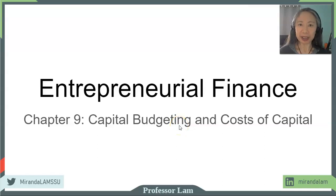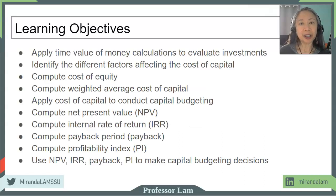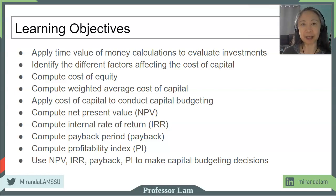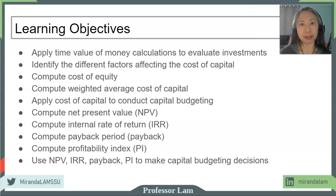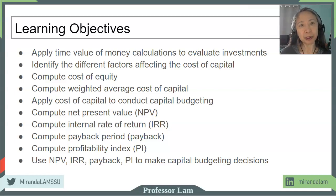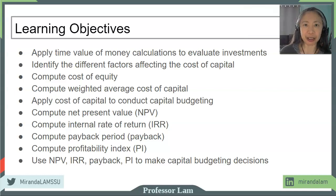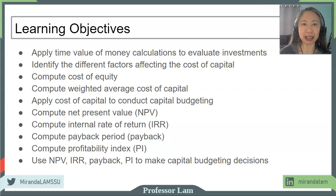Hello. Today we're going to go over Chapter 9, which focuses on capital budgeting and cost of capital. We're going to go over a very brief review of time value of money, focusing on using Excel to compute time value of money problems. In addition to that, we're going to look into different factors that affect the cost of capital, particularly factors that are unique to entrepreneurs, and then lastly capital budgeting methods, using Excel to conduct capital budgeting analysis.